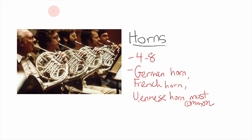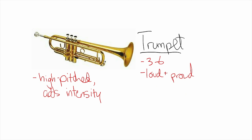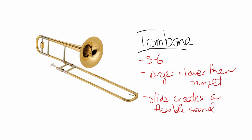Next up we have the brass family. The first group are horns — a catch-all term for German horns, French horns, Vienna horns, and so on. The German horn, which is the most common, has a warmer and richer tone than the French horn, which is a little lighter and more open sounding. There are about four to eight of these in an orchestra. Then we've got the trumpet — everyone knows the trumpet. There are three to six in an orchestra; they're super loud and often used to create a military effect or just to add volume and drama.